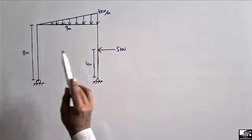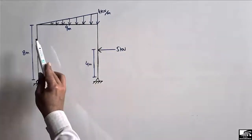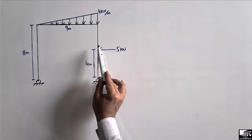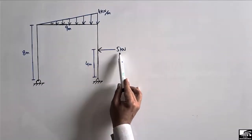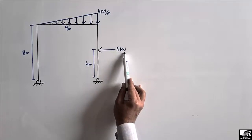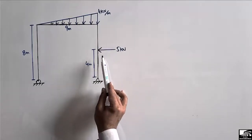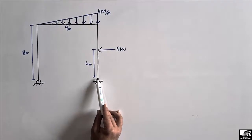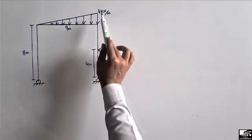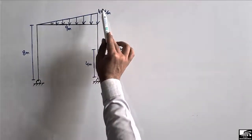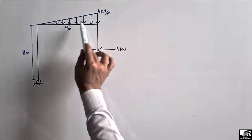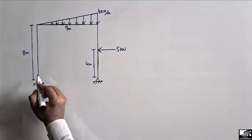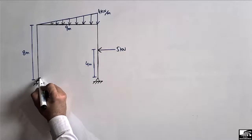The two vertical columns have a height of 8 meters. There is a point load acting on one column with a magnitude of 5 kilonewtons, at a distance of 4 meters from the support. There is also a load of 4 kilonewtons per meter acting on the beam. We have to find out the support reactions. Let's consider this is support A.